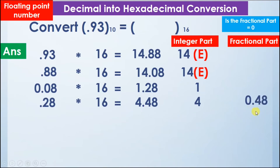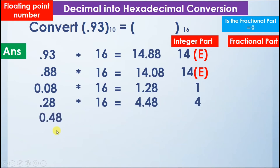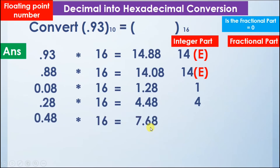The fractional part is not equal to 0, so we multiply again by 16 and we get the answer 7.68. So 7 is the integer part and 0.68 is the fractional part.